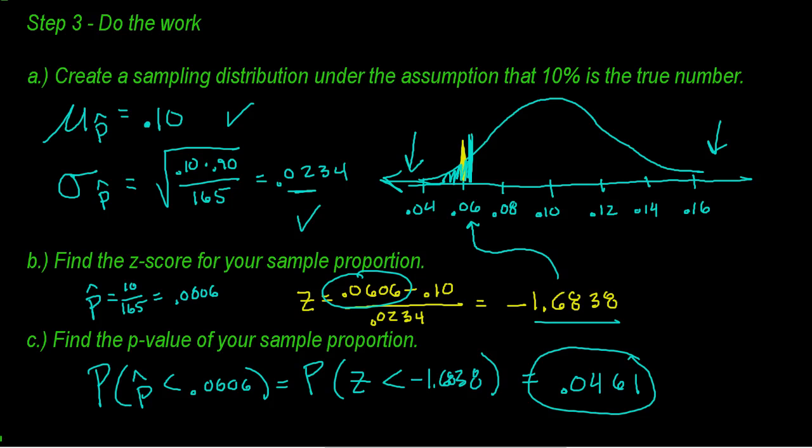This is a very specific probability. It is the probability of our sample occurring or more extreme, given that 10% is true. We built this entire model on the assumption that 10% was the true proportion. Assuming 10% is true, this is the probability of my sample occurring or more extreme.